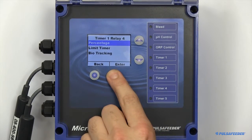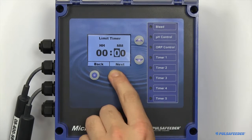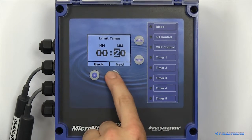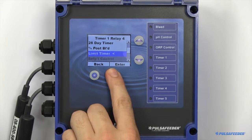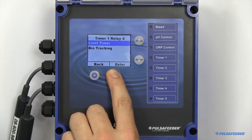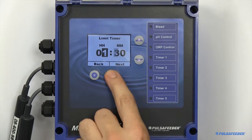The timer also includes a limit timer to prevent overfeeding. A limit timer, also known as a bleed and feed timer, will mirror your bleed relay. This timer also has its own independent limit timer.